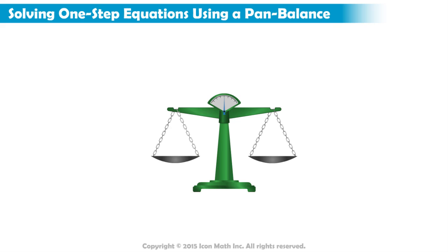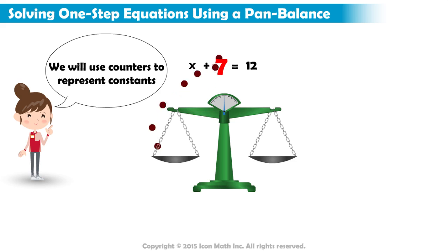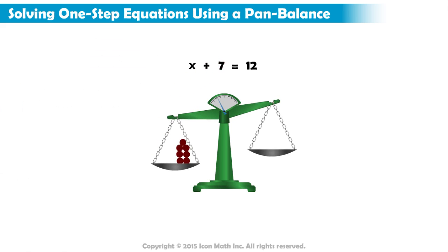Let's try to solve the equation x plus 7 equals 12. To represent constants, we will use counters. On the left side of the equation, we have 7 counters. We also have a variable. This bag will represent the variable. The bag contains some amount of counters.